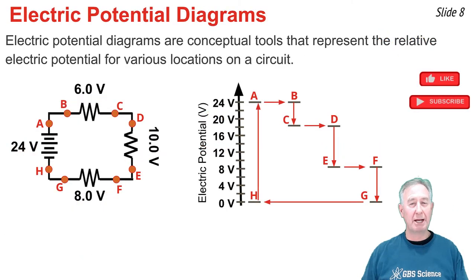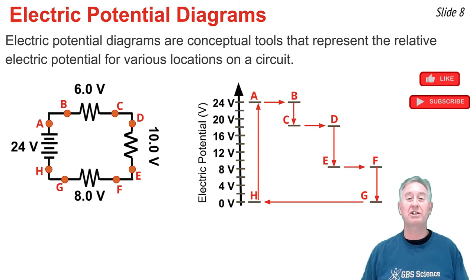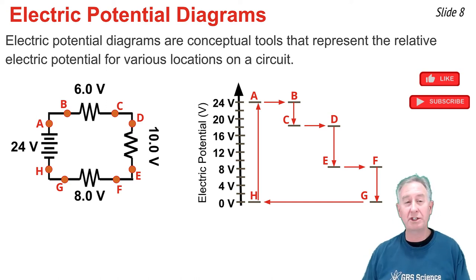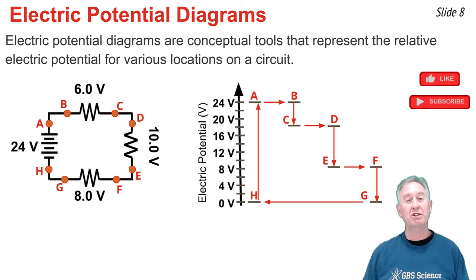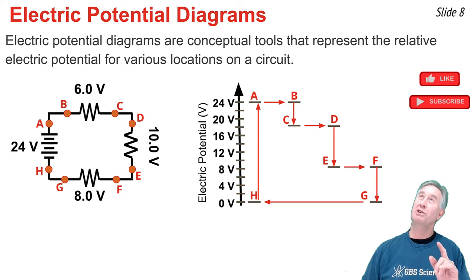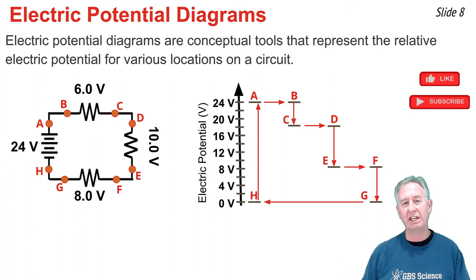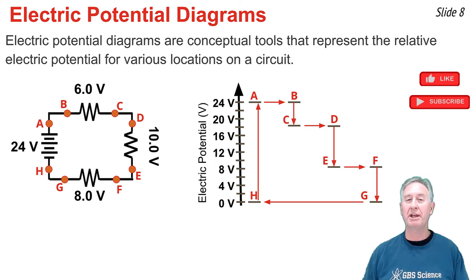An electric potential diagram is a conceptual tool that represents the amount of electric potential at various locations on a circuit. The circuit here is the one we just analyzed with the 3-ohm, 5-ohm, and 4-ohm resistors powered by the 24-volt battery, with the voltage drops noted next to each resistor. At location A — the positive terminal of the battery — charge is at its highest potential of 24 volts. Assuming negligible voltage drop in a wire, location B is also at 24 volts.